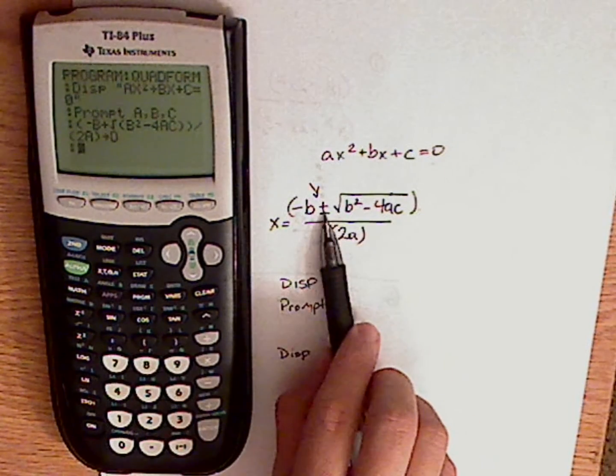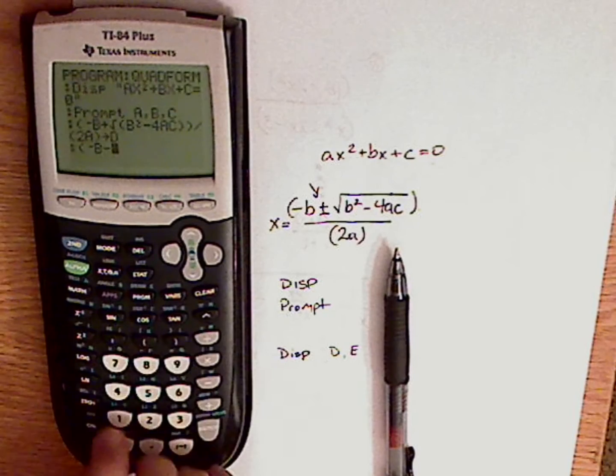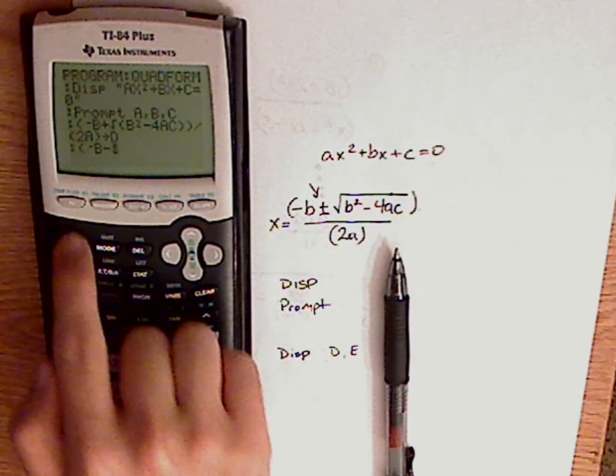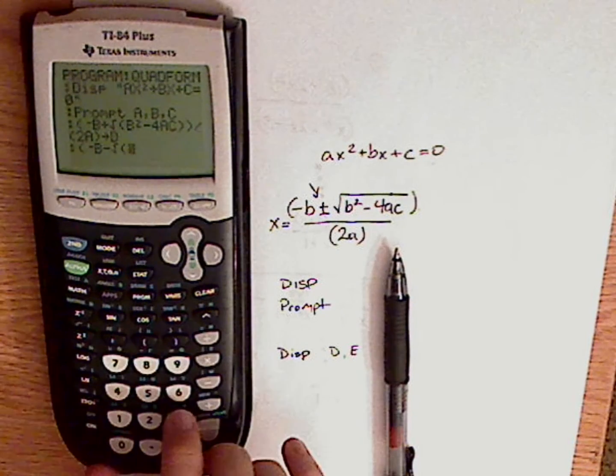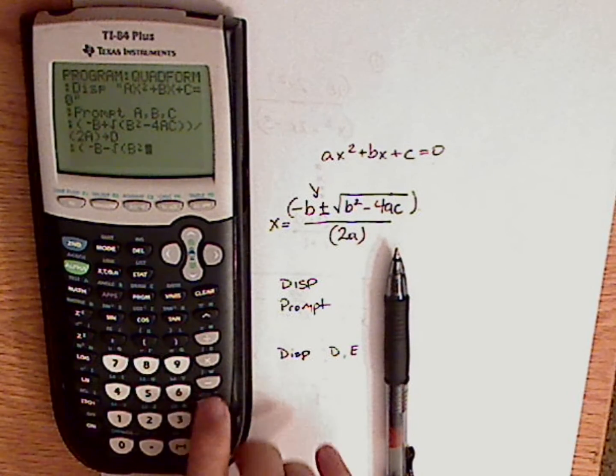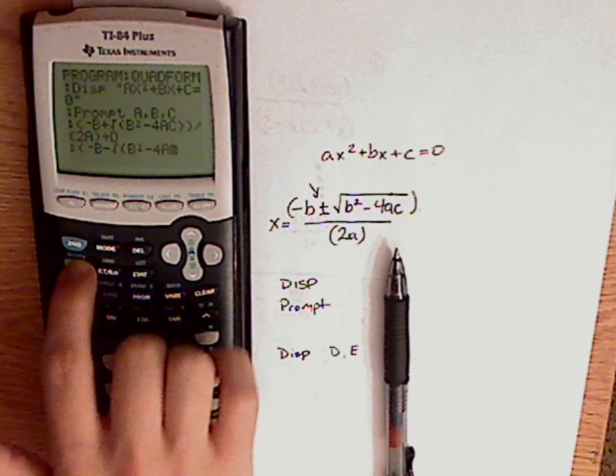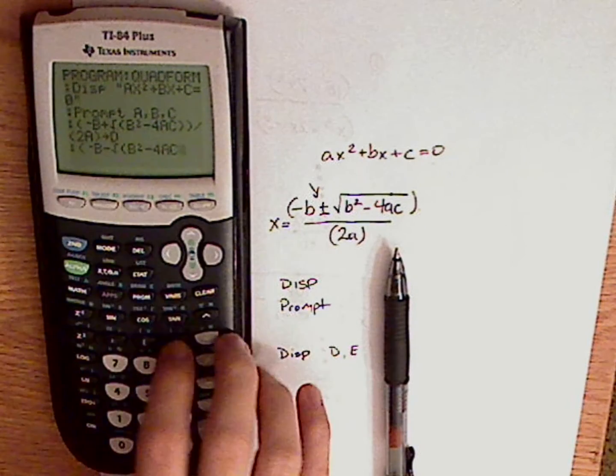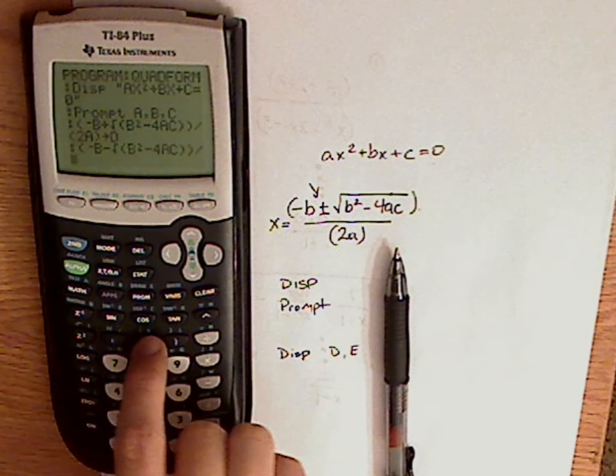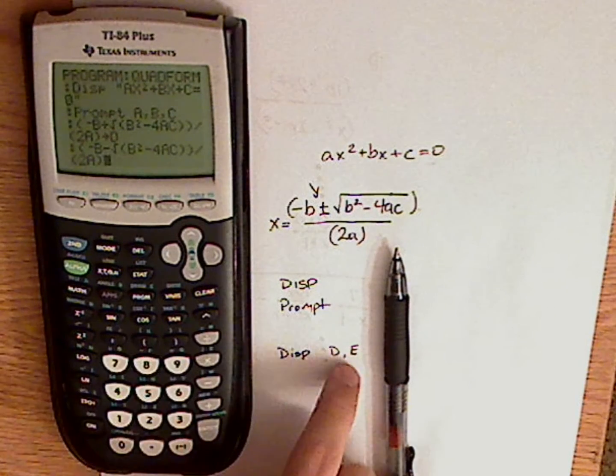Now I need the second one, the minus. So that's negative B again. Minus square root. Whoops. Push the wrong button. All right, there we go. Square root of b squared minus 4, A, C. Again, I have to close those parentheses and then close it again for the whole numerator. And then divide that by 2A. Close. And I'm going to store it as E.